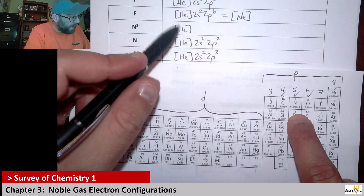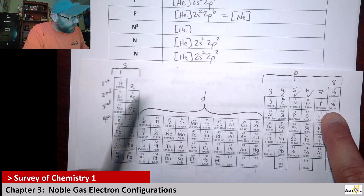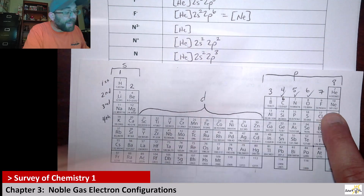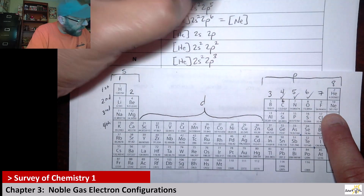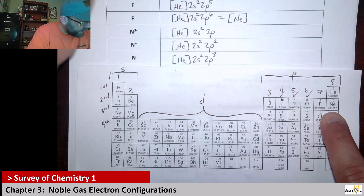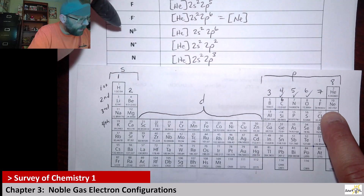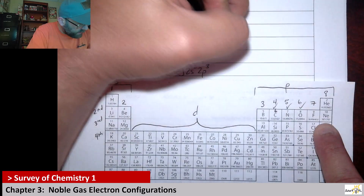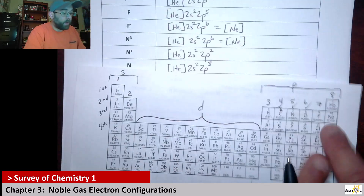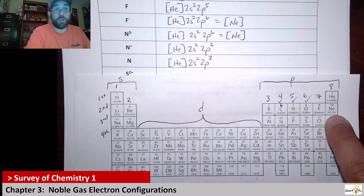For N three minus, it gains three electrons, so it now has eight total valence electrons. For the two S and two P, we get two in the two S and six in the two P: [He] 2S2 2P6. Six plus two equals eight. Another way to write this is simply neon in brackets, because N three minus has the same electron configuration as the neon noble gas.